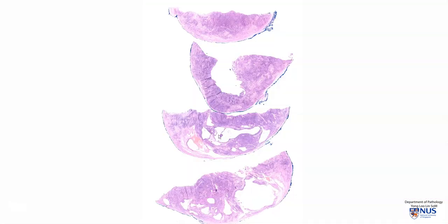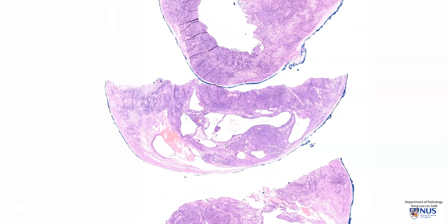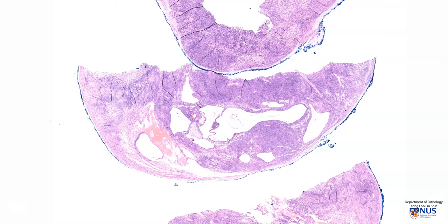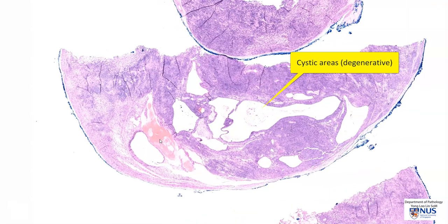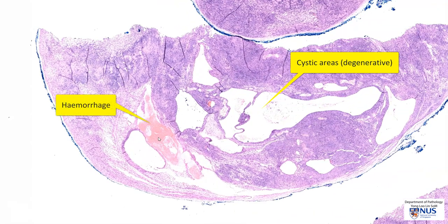These are further sections taken from the same tumor. What we can see here are these large, empty cystic spaces, and this reddish area, which is hemorrhage. Cystic change and hemorrhage can sometimes occur in schwannomas, especially the larger tumors.